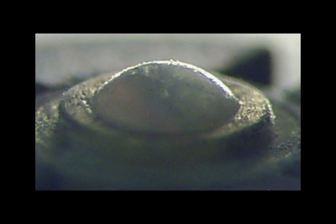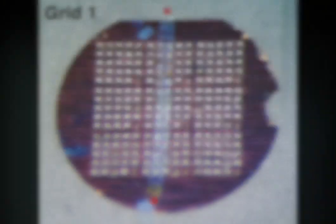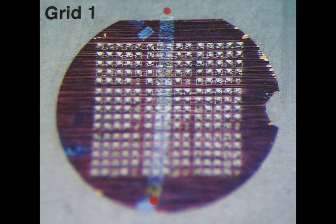High pressure frozen, vitreous domes of pelleted cells were first mounted in a cryo-ultra microtome, where the dome was trimmed into a block face and vitreous sections were cut approximately 200 nm thick. Ribbons of cryo-sections were collected on an EM grid and transferred later to the cryo-electron microscope for tomographic data collection.